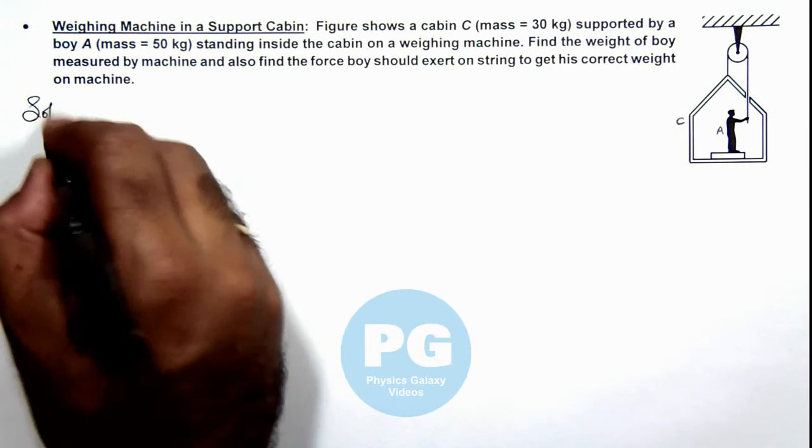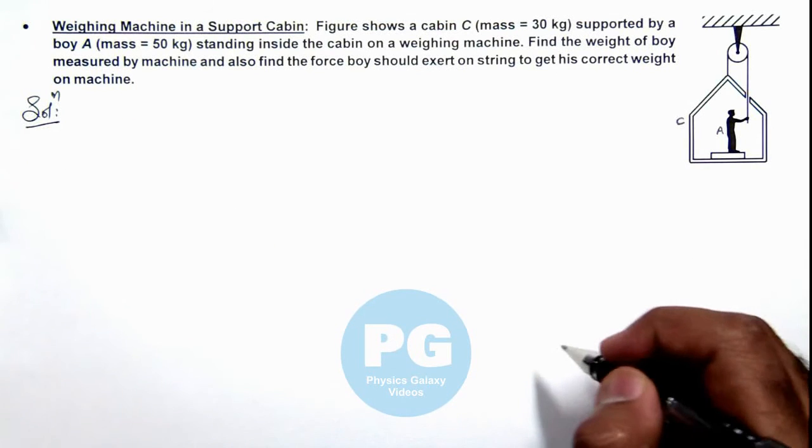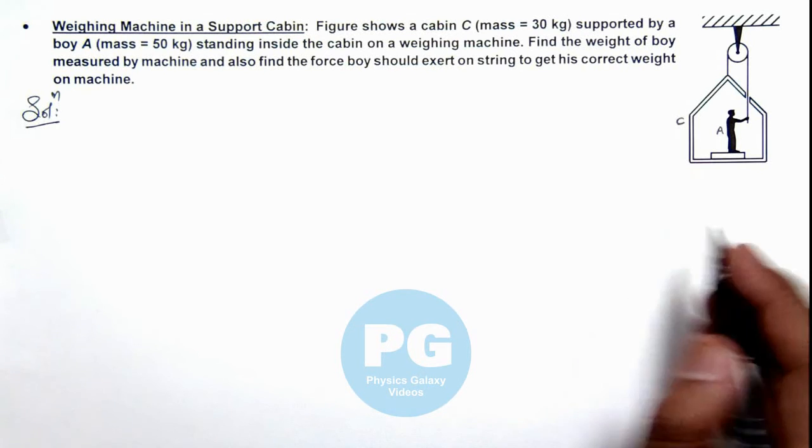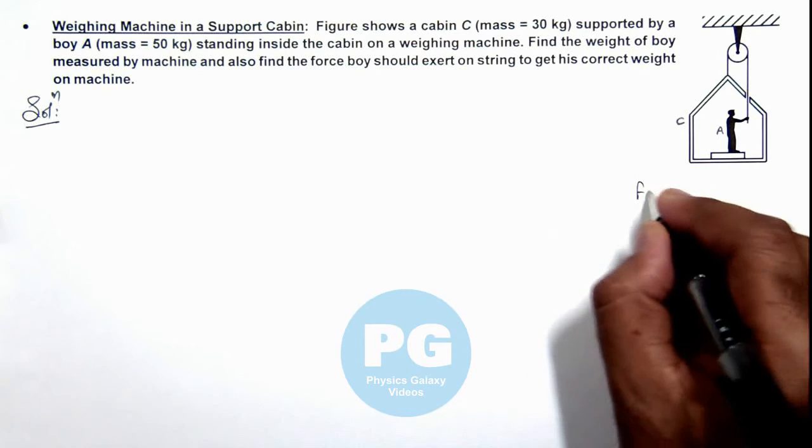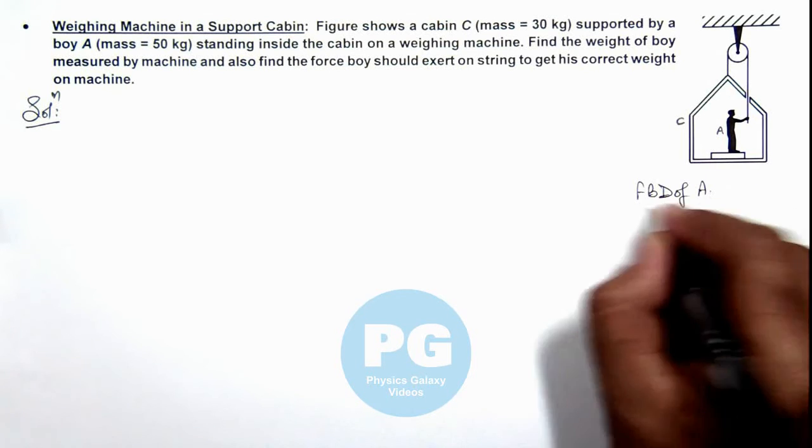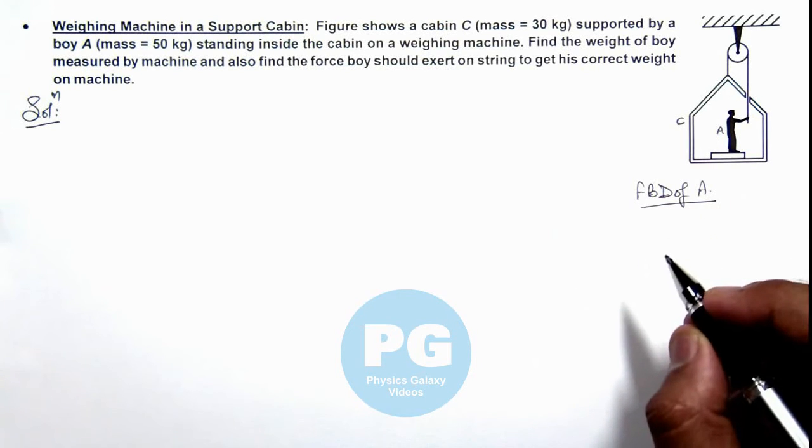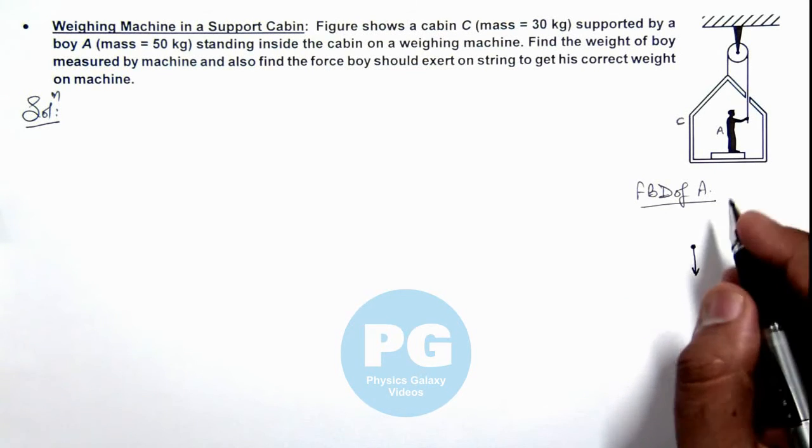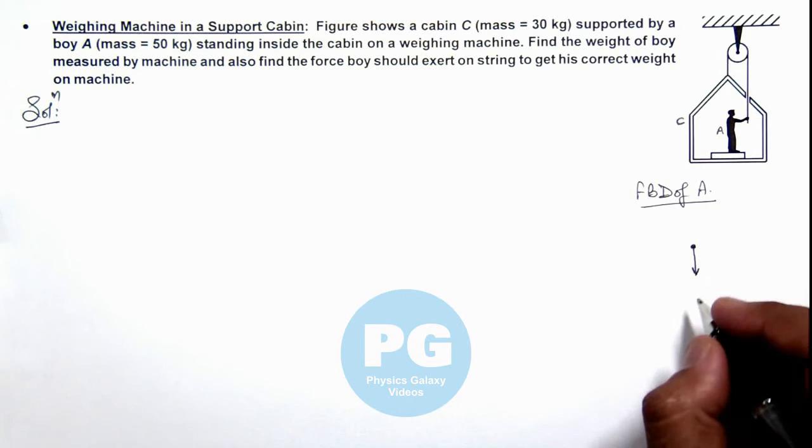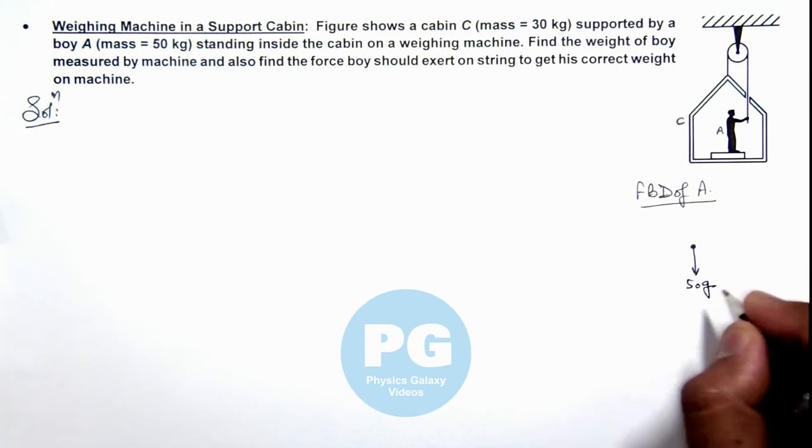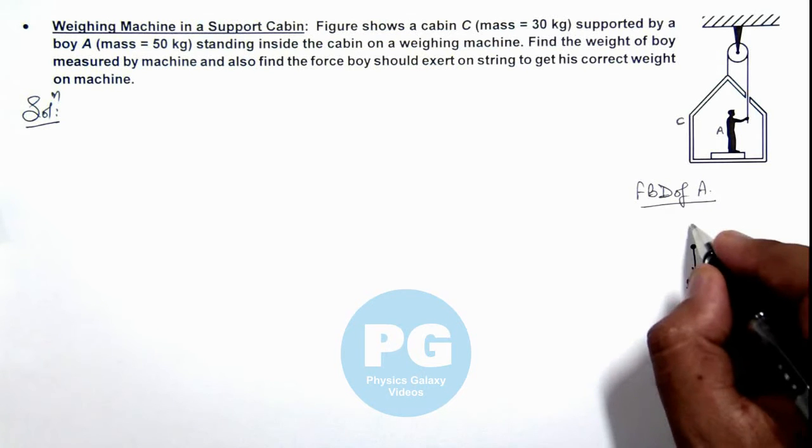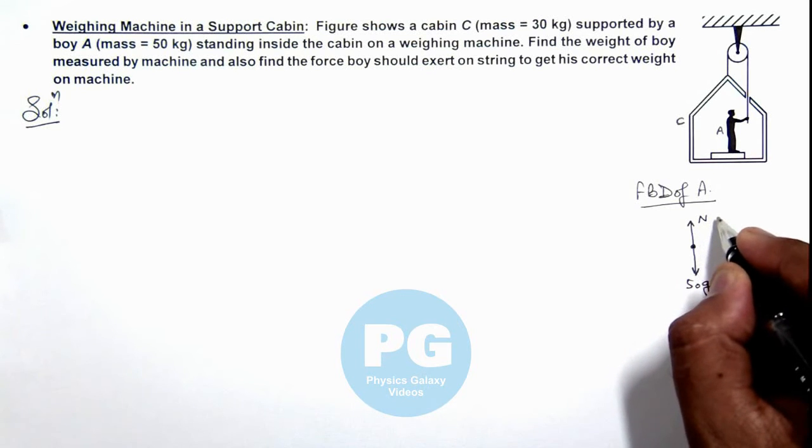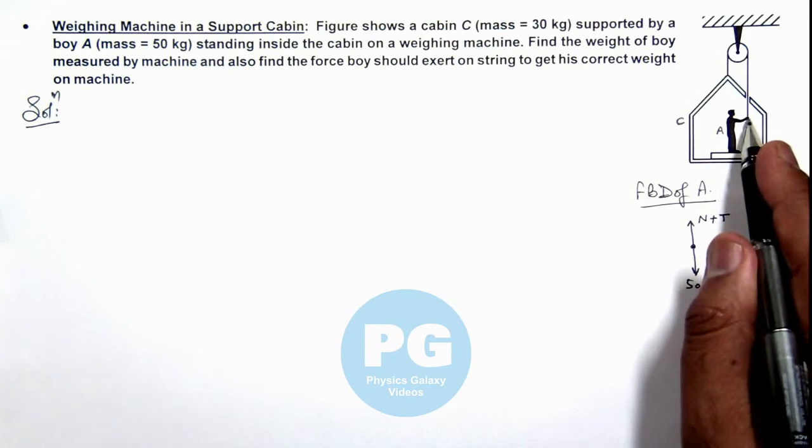To analyze the situation, we'll draw the free body diagrams of boy A and cabin C. Looking at the free body diagram of boy A, in the downward direction it experiences its weight, which is 50g. In the upward direction it experiences the normal reaction due to the machine, which is N, plus the tension acting on the string on its hand.